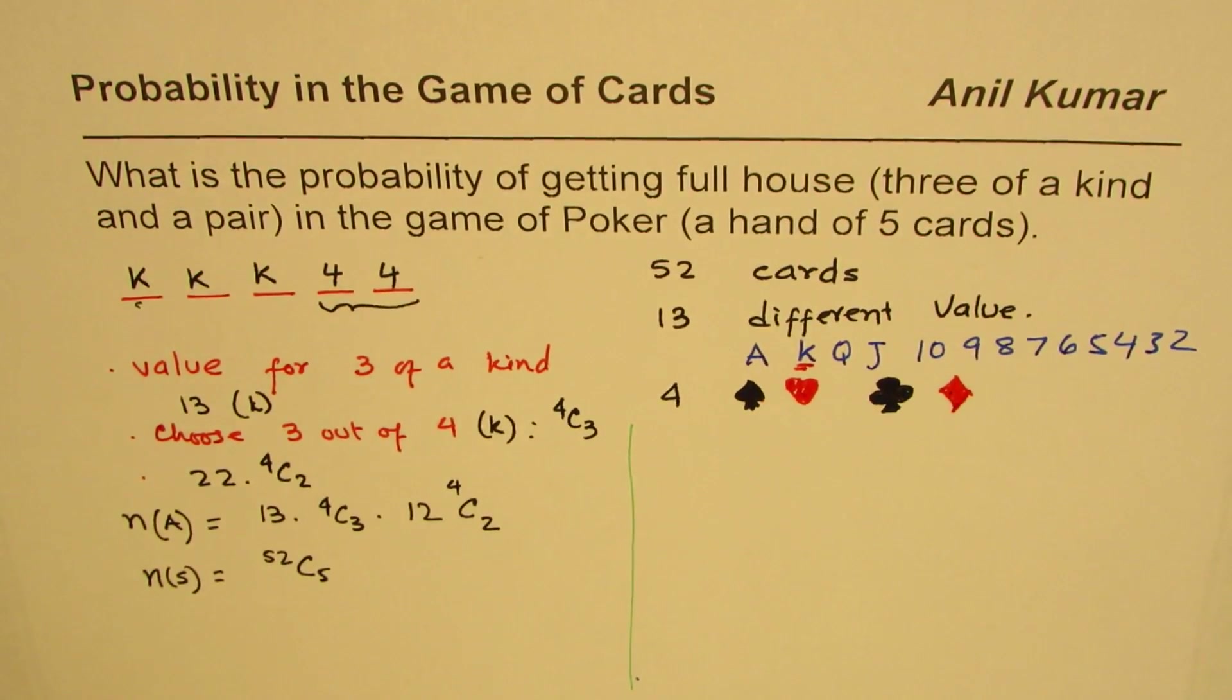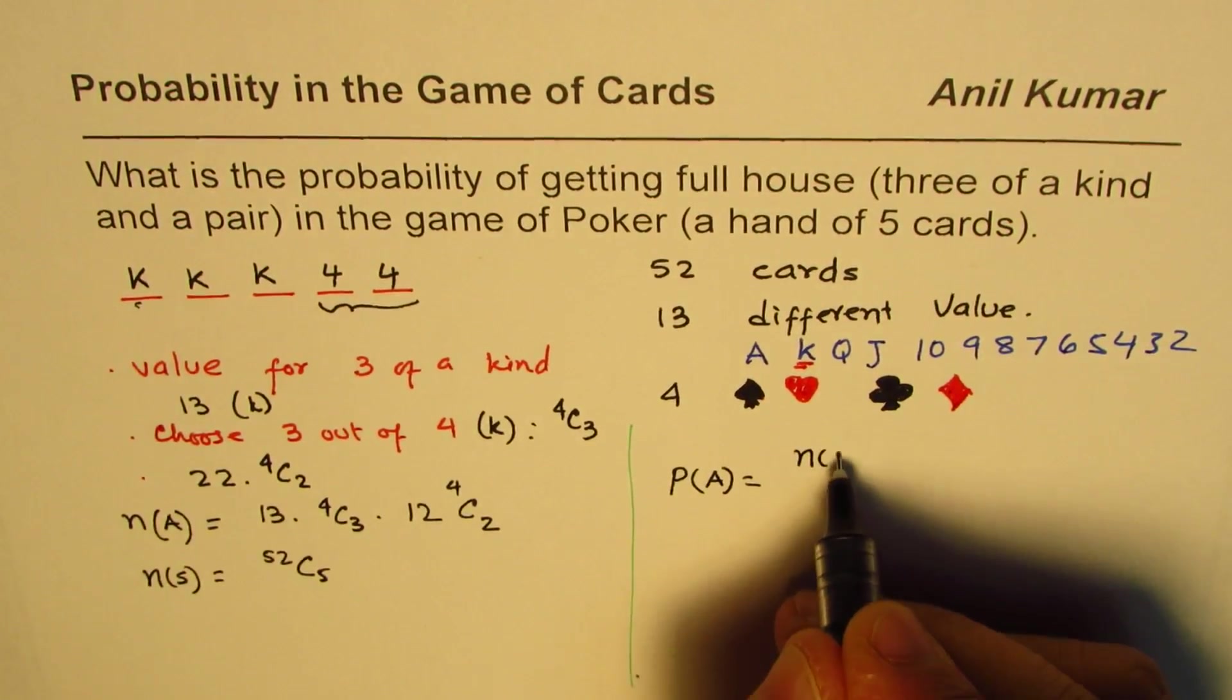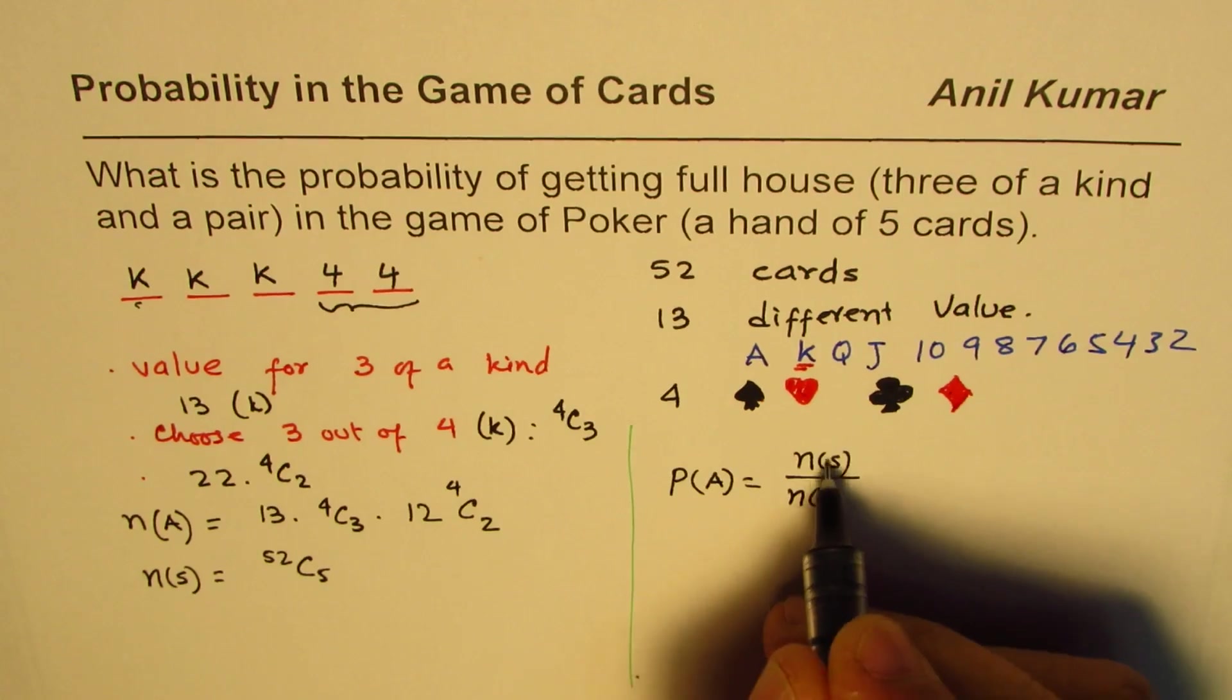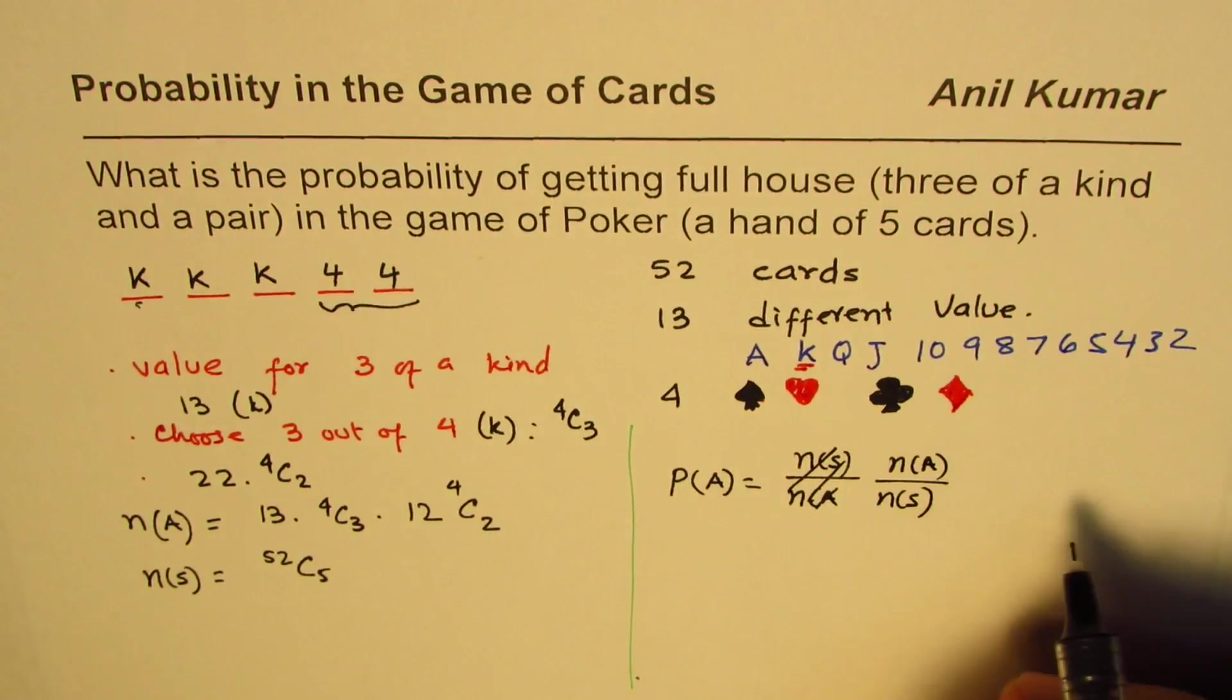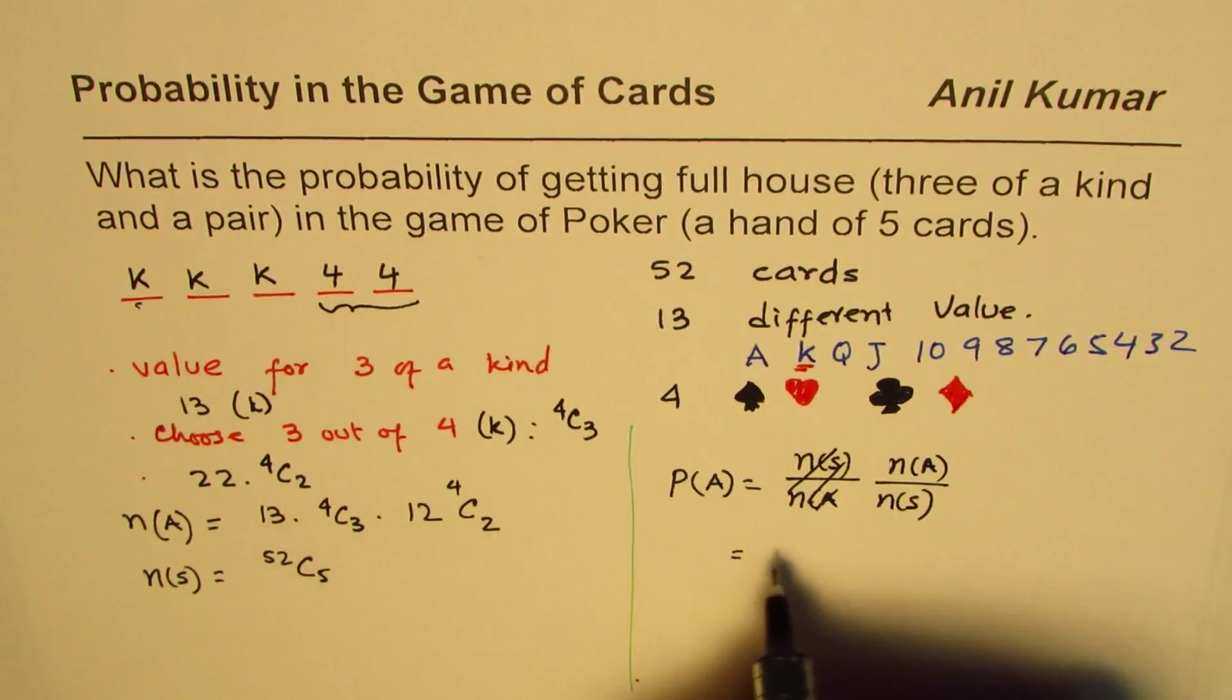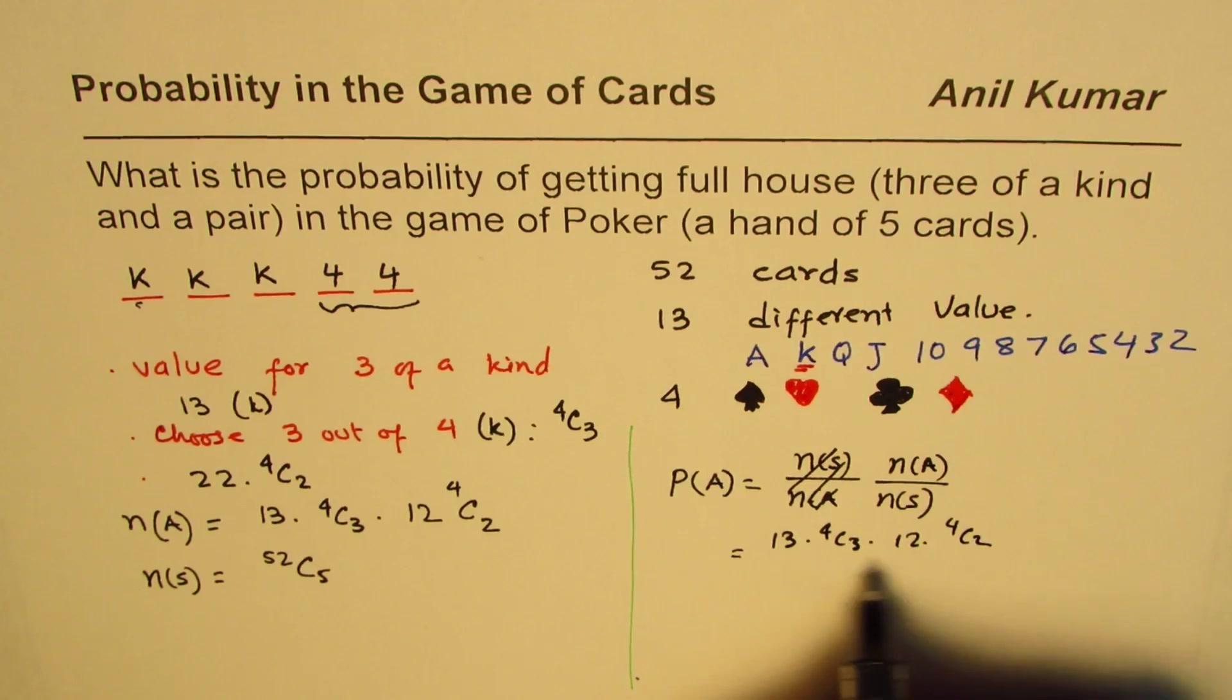And now we can easily find the probability. So the probability for this event is the ratio of these two, right? Favorable outcome over total number of outcomes. I mean favorable outcomes is A and the total number of outcomes is the sample space, right? So favorable outcomes are 13 × 4C3 × 12 × 4C2 divided by 52C5.